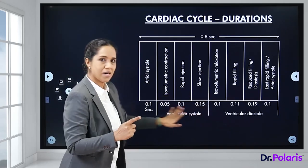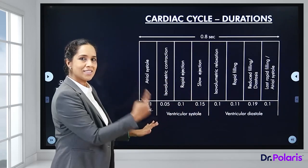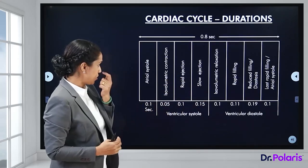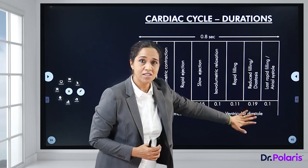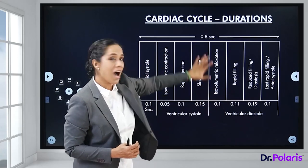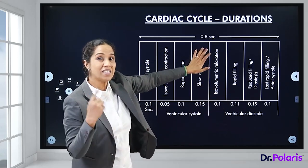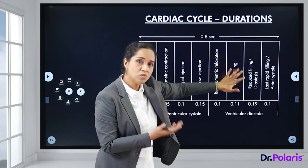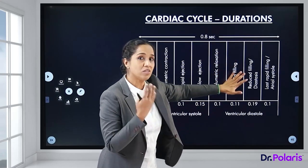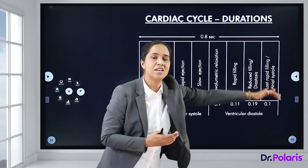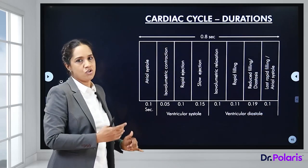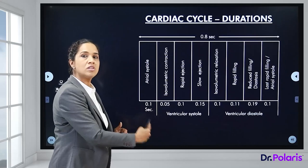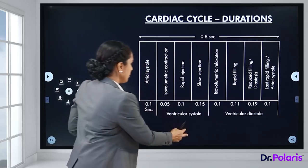These sub-phases add up to the total ventricular systole duration. Ventricular diastole is divided into isovolumetric relaxation, rapid filling, reduced filling (diastasis), and atrial systole — repeating in a cyclic manner.